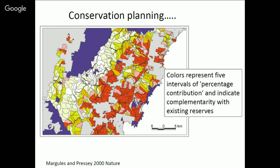Beta diversity is also fundamental to conservation planning. What you see here is a summary paper by Margules and Pressy where they go through the process of systematic conservation planning. In this map, colors represent intervals of the percent contribution — each different area contributes differently to conserving all of the species in this region. Red areas would be very important for conservation, whereas light areas wouldn't. Underlying this conservation planning is the notion of complementarity — having species that complement those within reserves — which is fundamentally beta diversity.